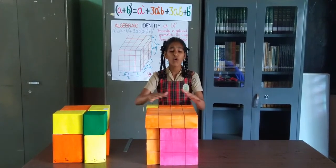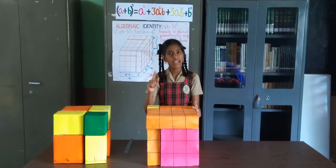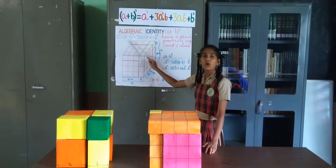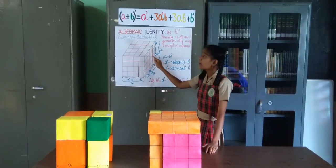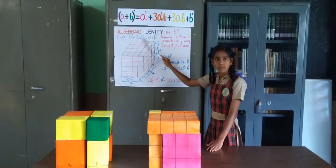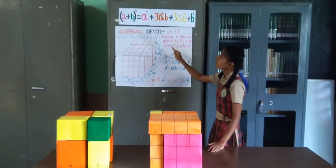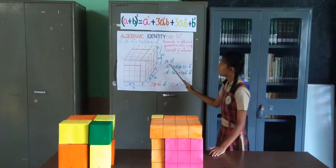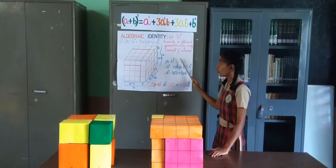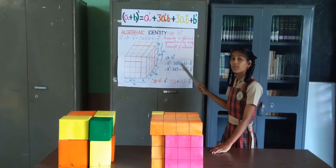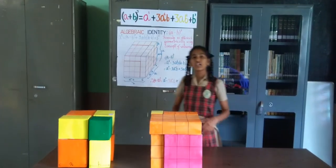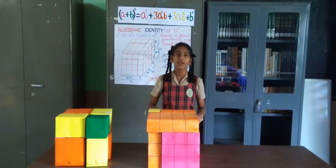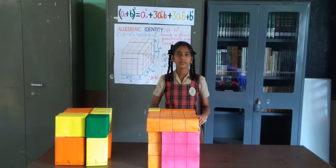Thus, the volume of this whole cube of side A units is made up of A minus B the whole cube, plus 3AB times A minus B, plus B cube. Moving these two terms to the left hand side, we get the formula of A minus B the whole cube as seen here. Thus, the algebraic expansion of A minus B the whole cube is explained geometrically. Thank you.